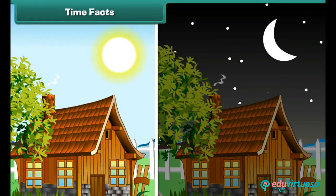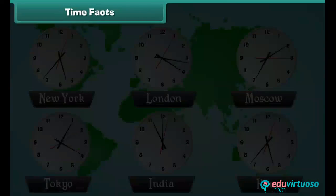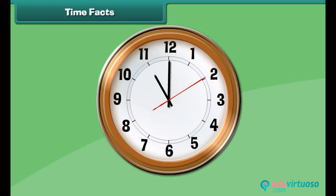As we just saw, at some places it is daytime and at others it may be night. Time changes when we move across the world. A clock is used to read time. As you see, a clock has three hands.